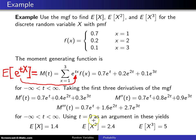When you plug in t equals 0 into M'(t), M'(0) turns out to be 1.4, and that's the expected value of X by the theorem. When you take M''(0), you get 2.4, which is the expected value of X² by the theorem. And when you take M'''(0), that will be 5, which is the expected value of X³ by the theorem.